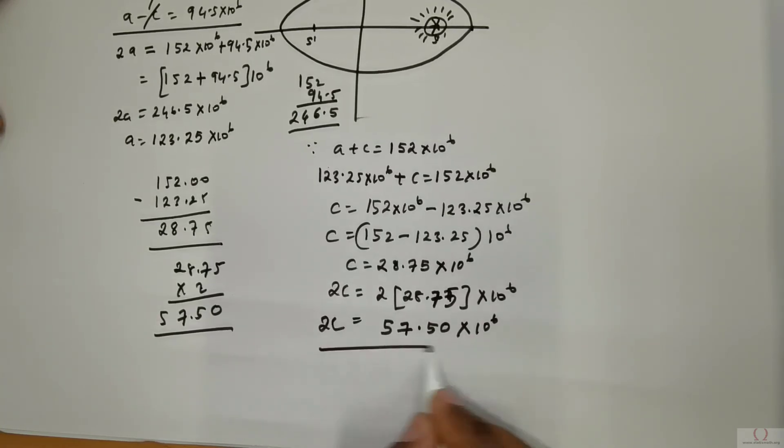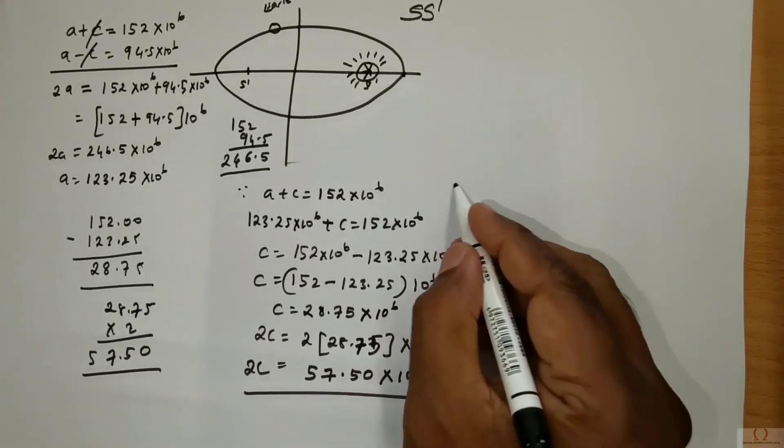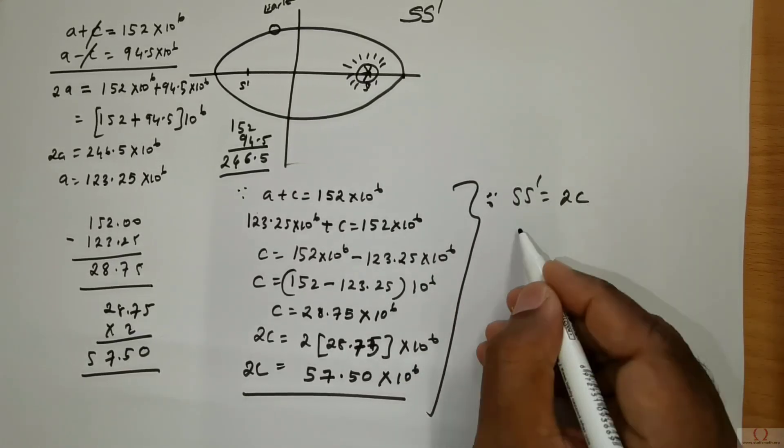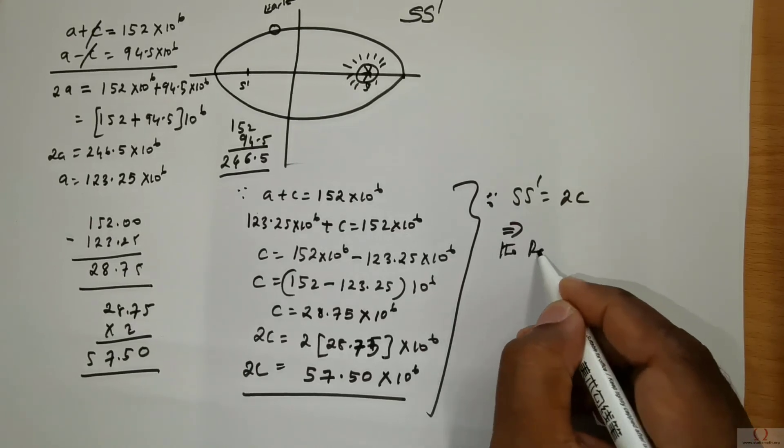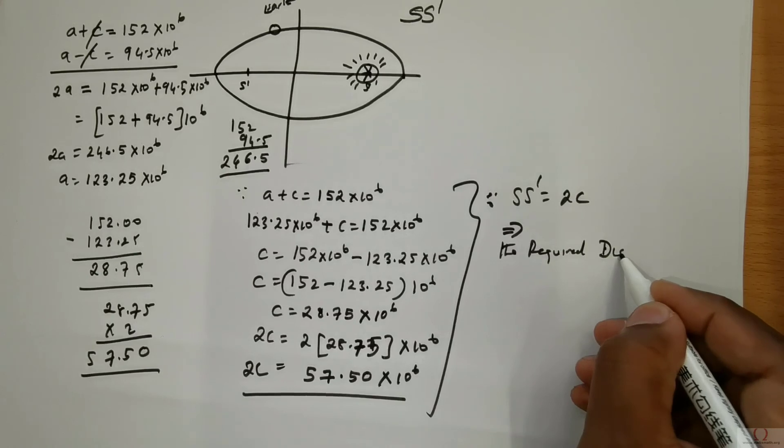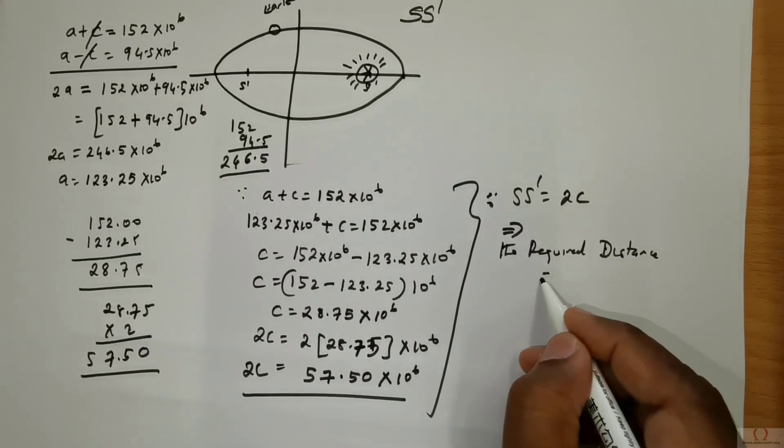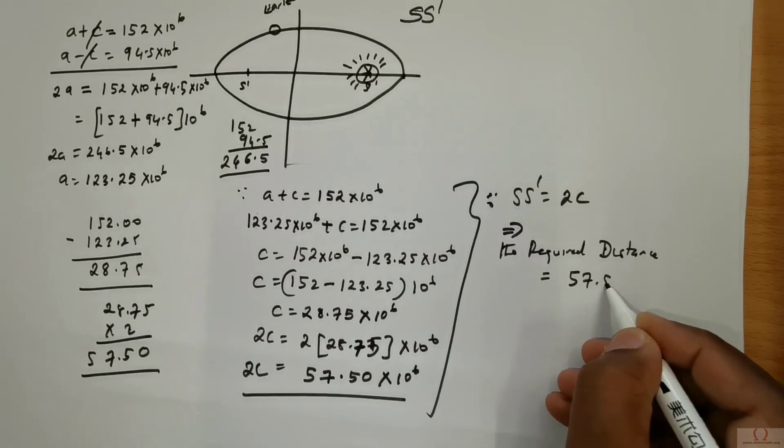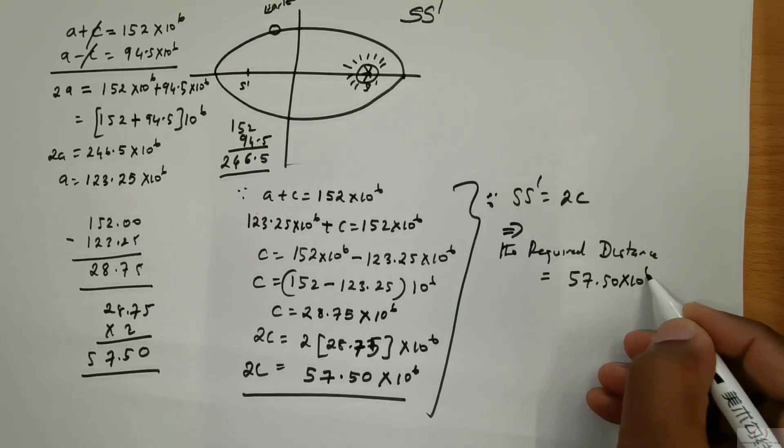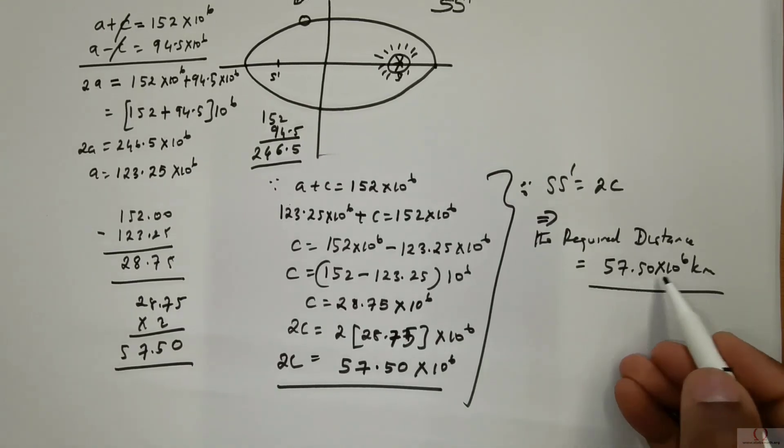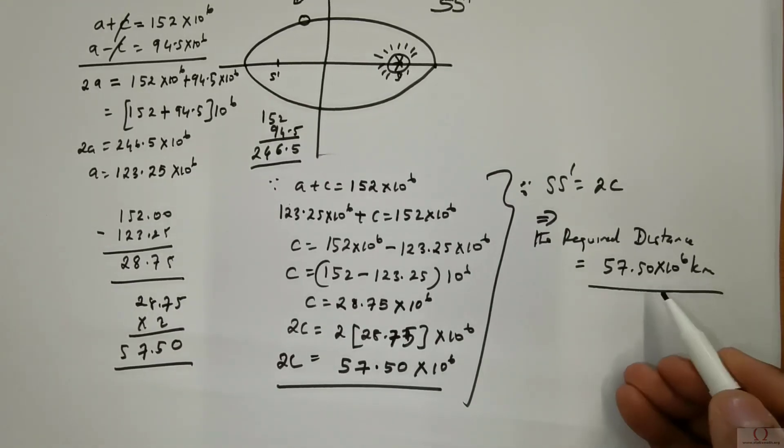So this is 2c. Now since S into S dash is equal to 2c this means the required distance is going to be 57.5 times 10 power 6 km. Of course you can if you want you can remove the decimal and bring the power degree down but the solution is fine for me.